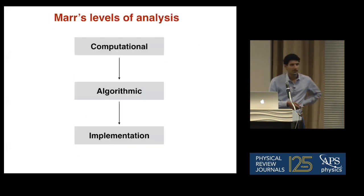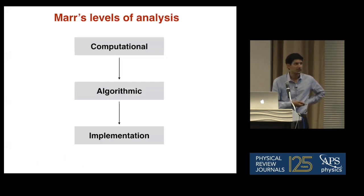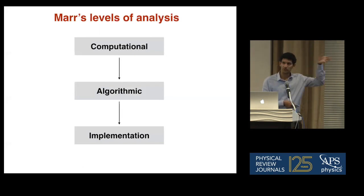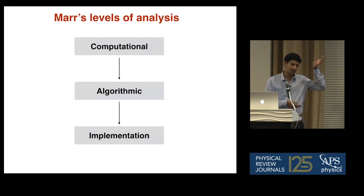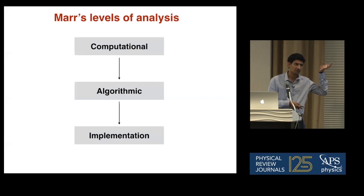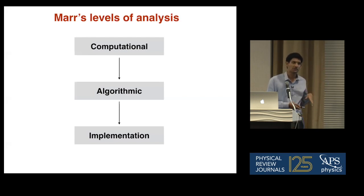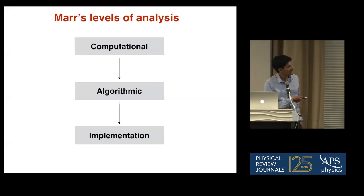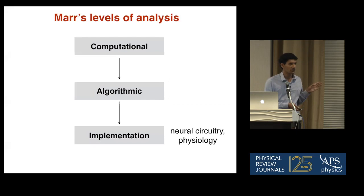When we talk about behavior, it's useful to think about understanding biological behavior in terms of three levels of analysis. You have a computational level, which is basically the computational task that the animal is trying to solve. Then given a computational task, the animal uses an algorithm to solve the task. And then for a particular algorithm, you have some biological implementation — the neural circuitry, the physical circuitry, the physiology, and so on.